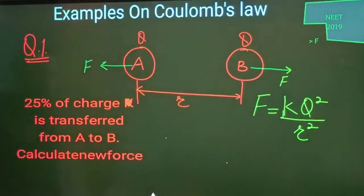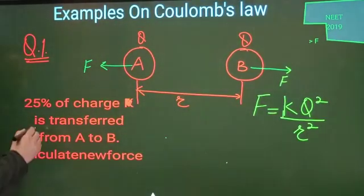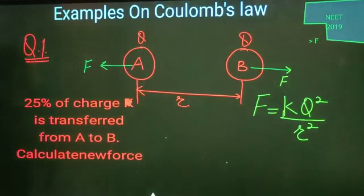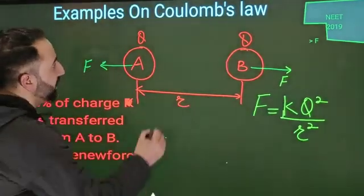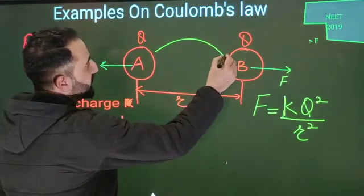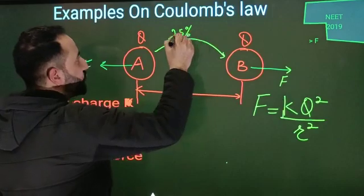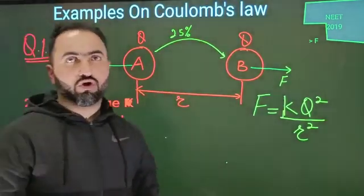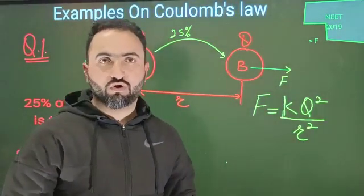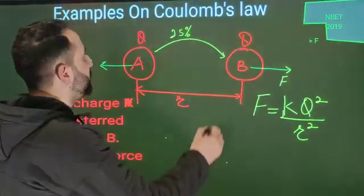Now, what's the question? The question is simply like this: 25 percent of charge is transferred from A to B. You must know that 100 percent is equal to 1, 50 percent is equal to 1/2, and 25 percent is obviously equal to 1/4.